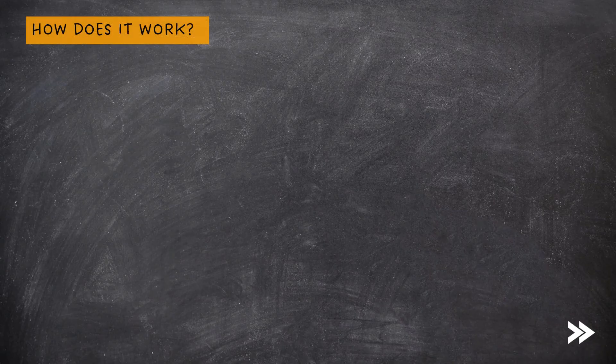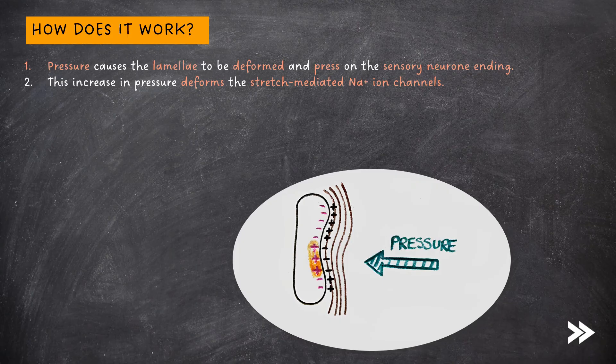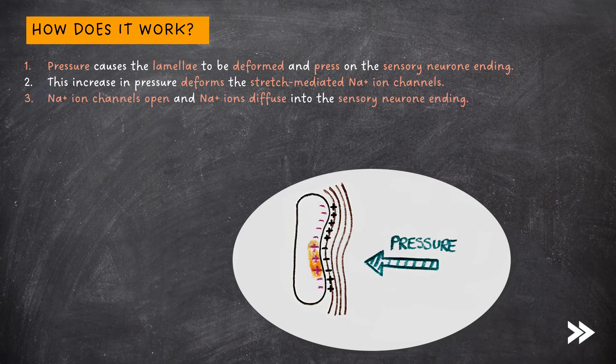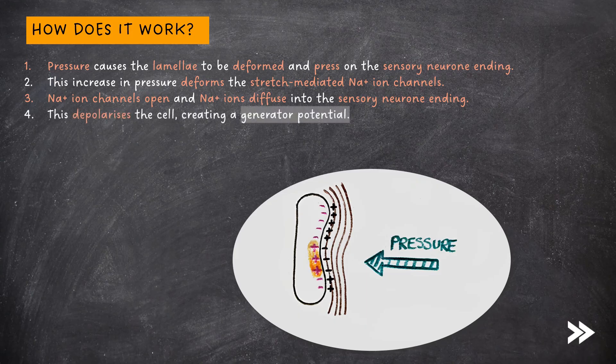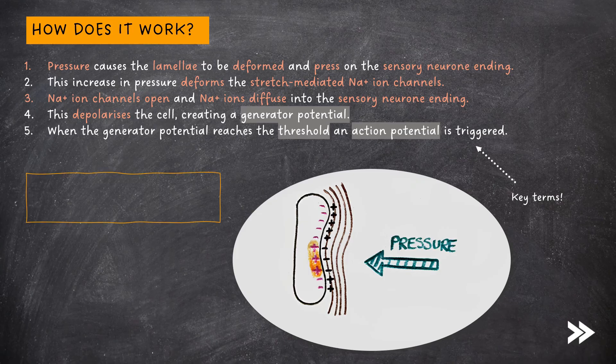So how does a receptor like the Pacinian corpuscle actually work? Well, pressure causes the lamellae to be deformed and pressed on the sensory neuron ending. This increase in pressure deforms the stretch-mediated sodium ion channels. The sodium ion channels open, and sodium ions diffuse into the sensory neuron ending. This depolarizes the cell, creating a generator potential. When the generator potential reaches the threshold, an action potential is triggered. Note that slow pressure changes or prolonged pressure do not lead to a response.